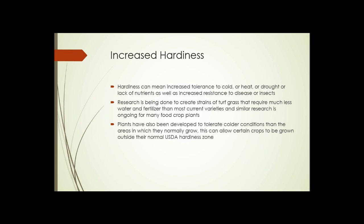Increased hardiness means increased tolerance to cold, heat, drought, or lack of nutrients, as well as increased resistance to disease or insects. Research is being done to create strains of turf grass that require much less water and fertilizer than most current varieties, and similar research is ongoing for many food crop plants. Plants have also been developed to tolerate colder conditions than the areas in which they normally grow — for example, peaches, which normally grow in zone 6 and warmer, have varieties developed to survive as far north as zone 4.